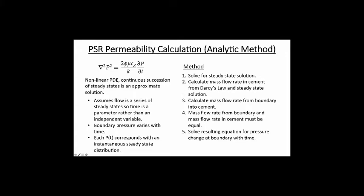From the steady-state solution and Darcy's law, you can calculate the mass flow rate in the cement. An assumption here is Darcy flow. The viscosity is assumed constant, and for the succession of steady states solution, gas compressibility is assumed negligible given the low pressure used in the sixteenth-inch tubes. Permeability K is also assumed uniform throughout the cement.